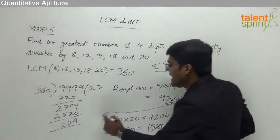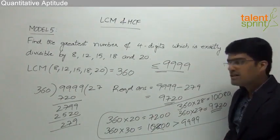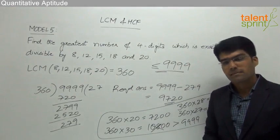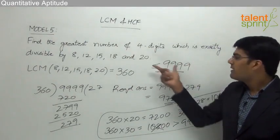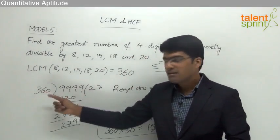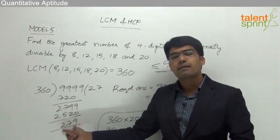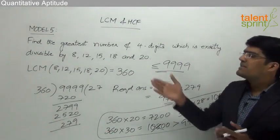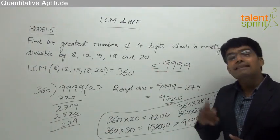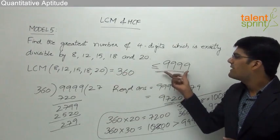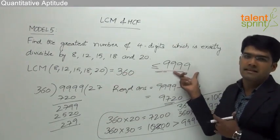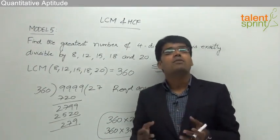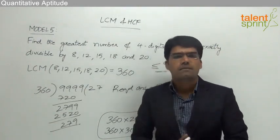So the simple solution is: first take the LCM of the given values (360 in our case), then since we require the largest four-digit number, divide 9999 by 360 to find the remainder, and subtract that remainder from 9999 to get the required answer. Likewise, if the question asks for the largest five-digit number, apply the same procedure but use 99999 instead of 9999.